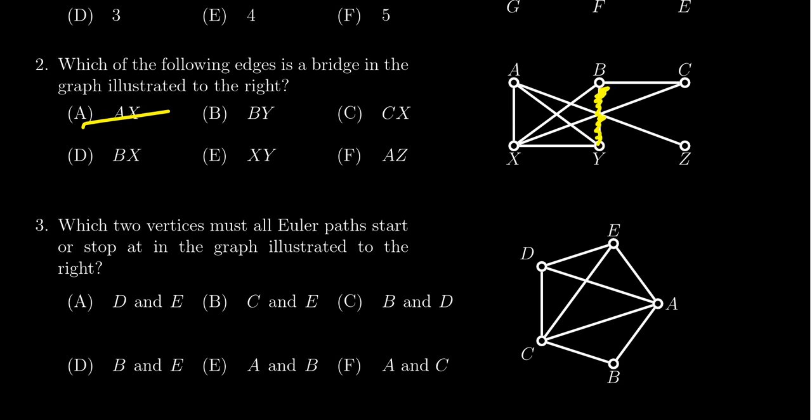Without BY, if you remove BY right here, notice how the graph is still connected. In particular, B can still reach every vertex it could before, and so BY is not a bridge. If you look at CX, something similar is happening. If you take out CX, you can actually still get from C to X if you detour through B, so it's not going to be a bridge.